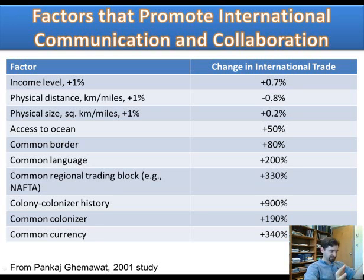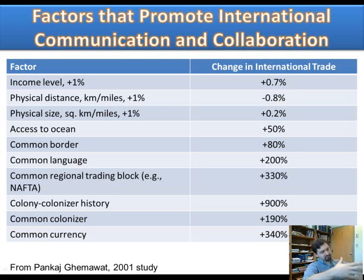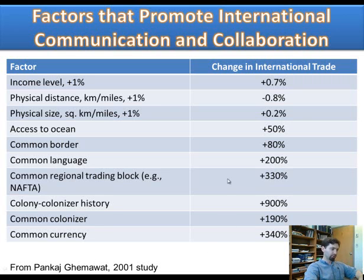To clarify: greater distance between countries obviously decreases the probability that the two countries will trade. Increased physical size of countries increases probability. Greater length of border, access to the ocean, and common border all matter and you can explore these numbers further.